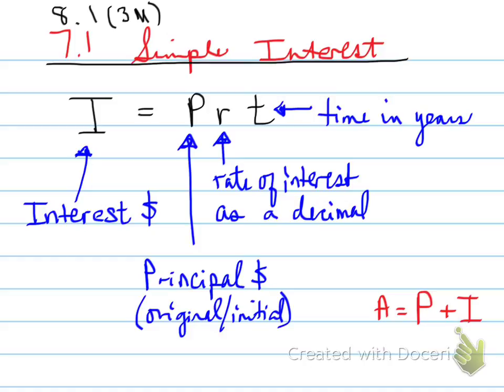A being later, is equal to the present value, the principal, the current amount, P, the original value, plus the interest dollar amount.